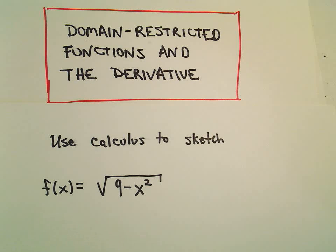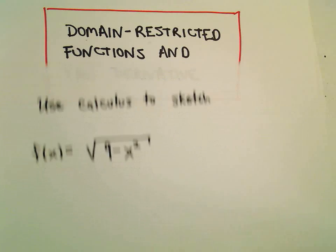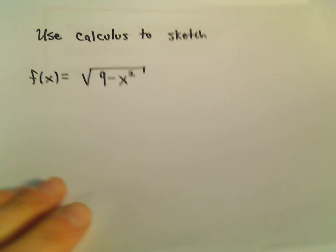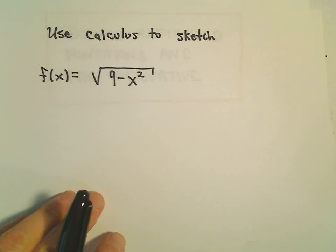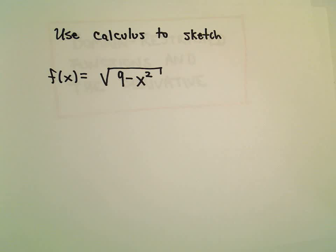In this example we're going to use a little bit of calculus to sketch the function the square root of 9 minus x squared. Potentially this may be a function that you recognize, and at the tail end maybe I'll point out how to recognize it, but for now let's just use a little bit of calculus.